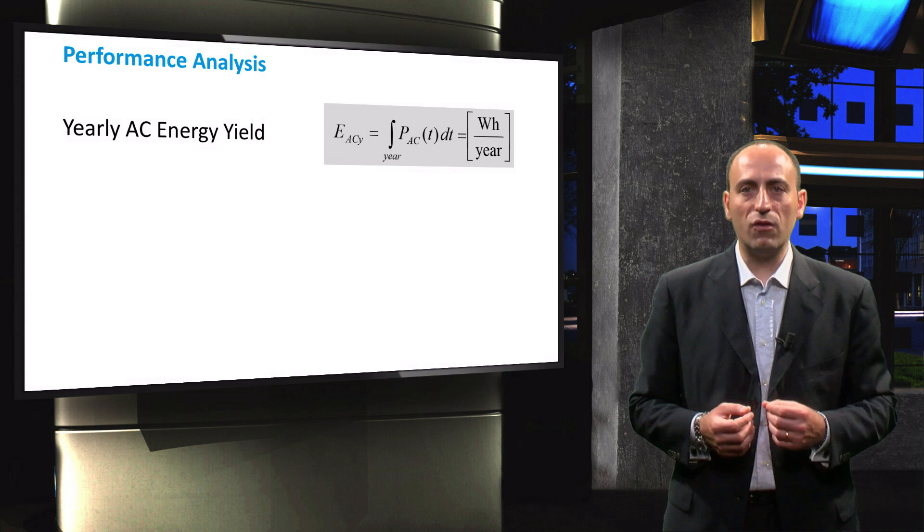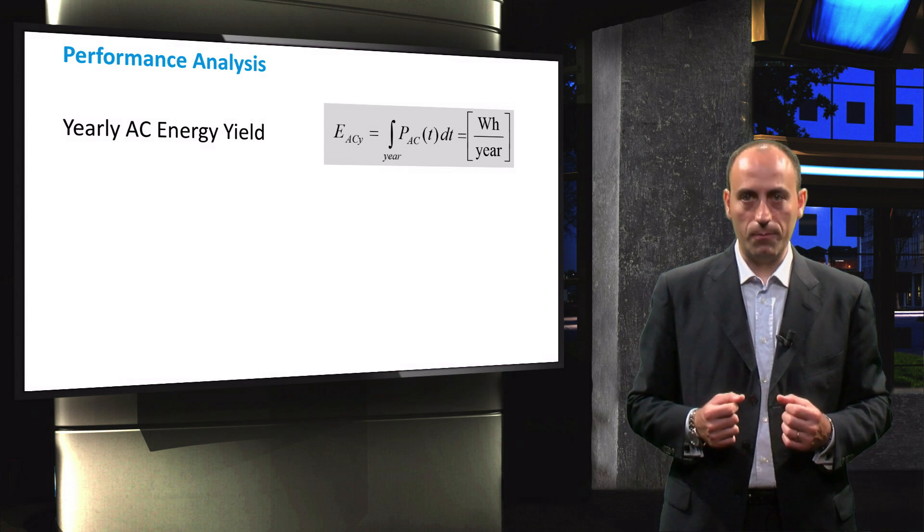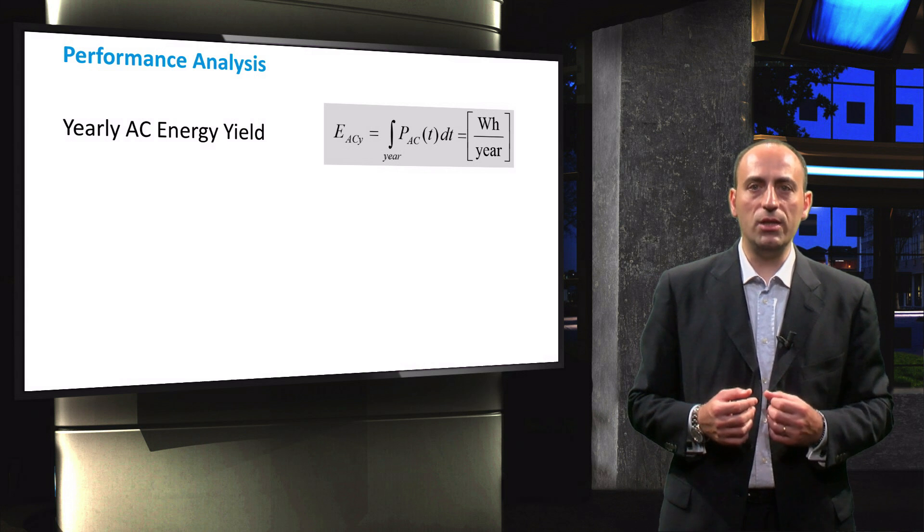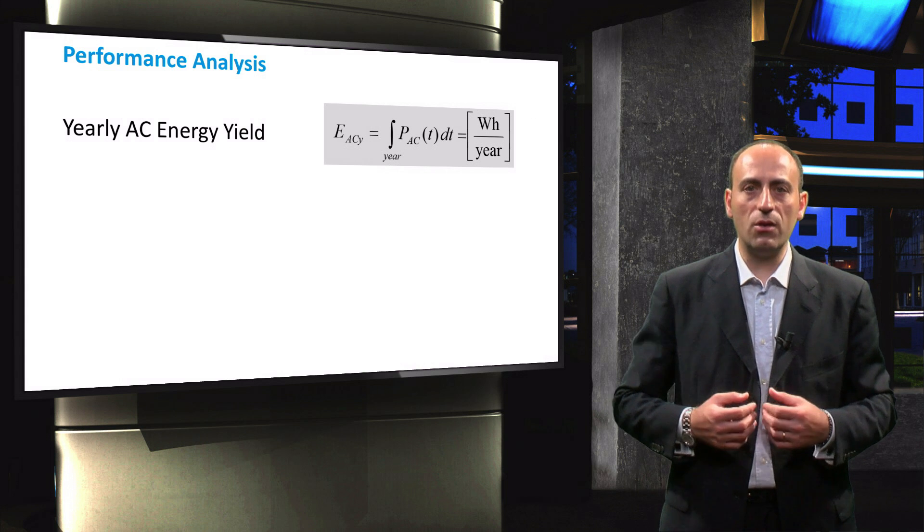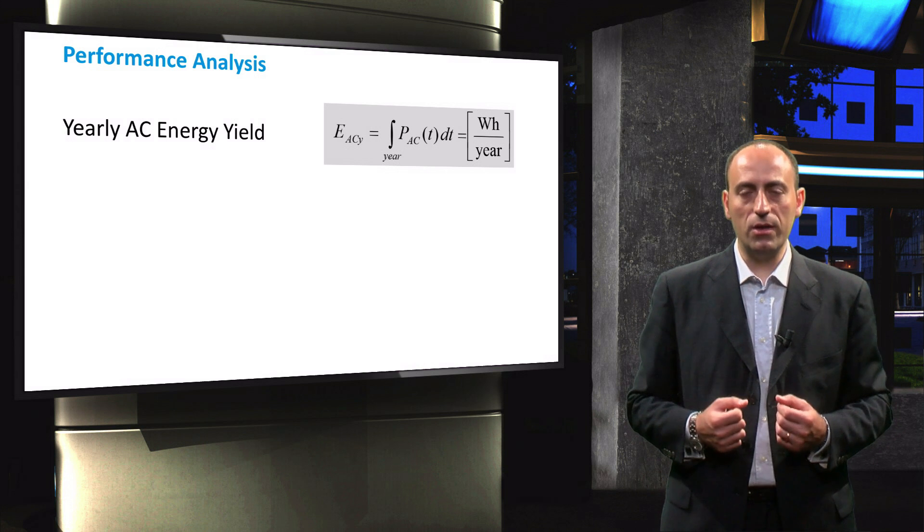The next set of parameters considers the performance over time period of a year. The annual AC energy yield, EACY, generated by the PV system, is obtained by integrating the instantaneous AC power.